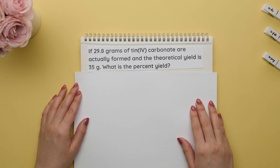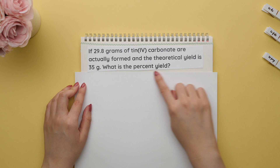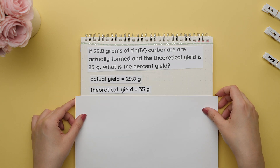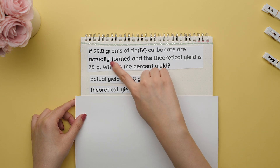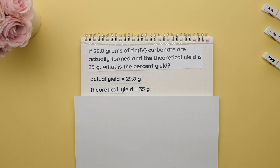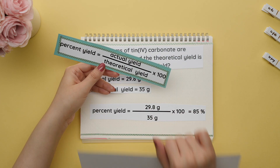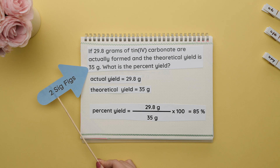This question states: if 29.8 grams of tin(IV) carbonate are actually formed and the theoretical yield is 35 grams, what is the percent yield? Start by identifying what you are given — both the actual yield and theoretical yield. A key word here is 'actually,' hinting that this is our actual yield. Plug into the formula and multiply by 100 to get our percent yield, which has two sig figs since our lowest number of sig figs is two in this question.